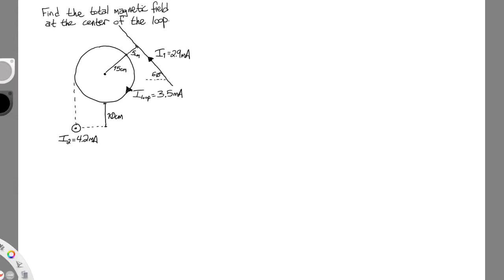As promised, I have a magnetic field superposition problem for you. I have an arrangement of three wires shown below: a circular loop of wire carrying a clockwise current of 3.5 milliamps, a straight piece of wire carrying a current up and to the left of 2.9 milliamps angled at 60 degrees above the horizontal, and a wire carrying 4.2 milliamps of current directly out of the board.